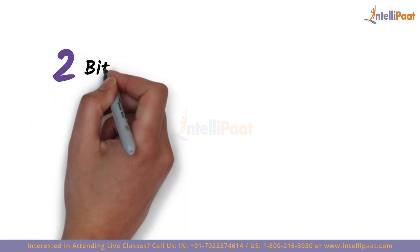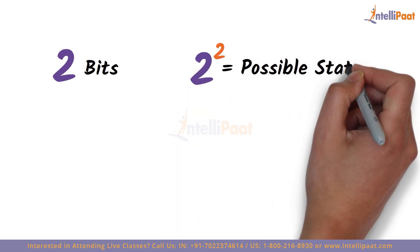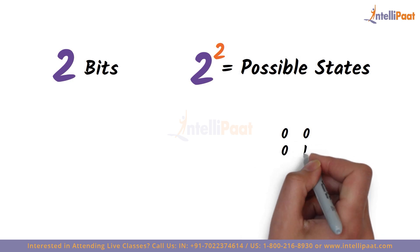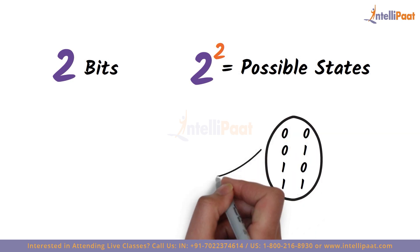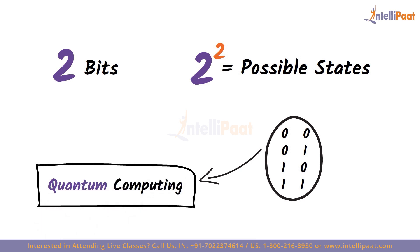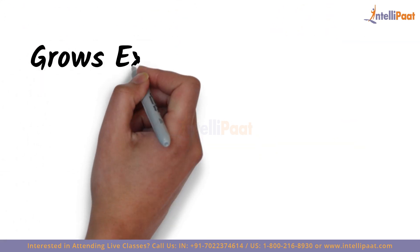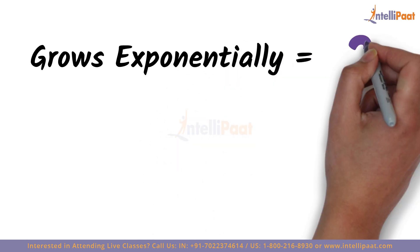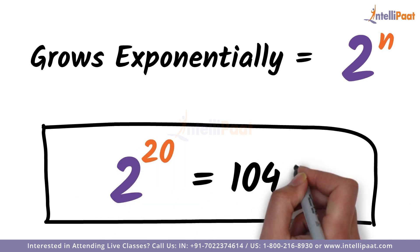If there are two bits, that means we have 2 to the power 2 possible states — those are 00, 01, 10, and 11. With quantum computing, it's possible to go beyond these states. This number grows exponentially with each extra qubit. Twenty qubits can already store a million values in parallel.